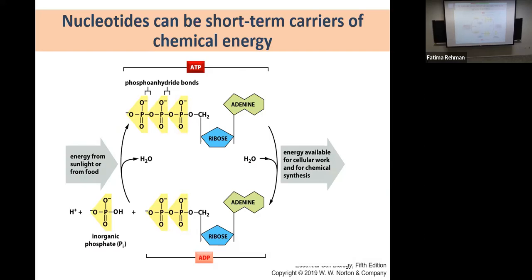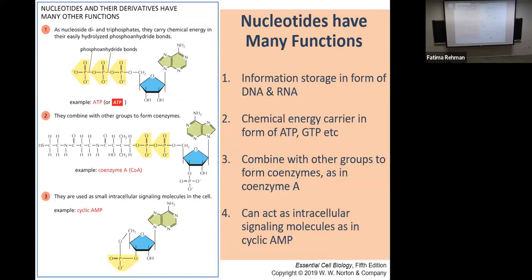The ADP must recombine with another phosphate to convert back to ATP, and that cycle goes on millions of times in each cell every second. Nucleotides have many functions beyond information storage. In the form of DNA and RNA, they store information. As ATP and GTP, they carry chemical energy. They can combine with other groups to create coenzymes — coenzyme A is an example. They also act as intracellular signaling molecules, such as cyclic AMP, which we'll discuss in detail during cell signaling.